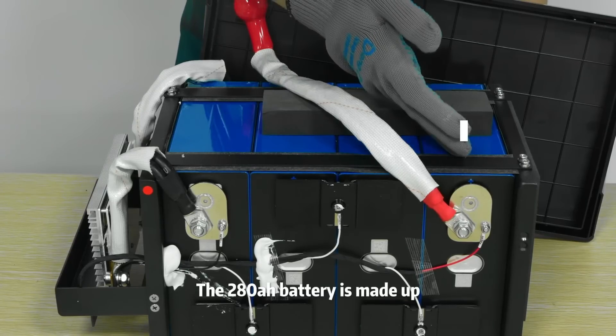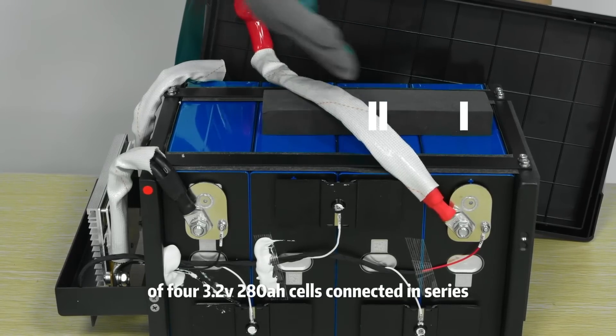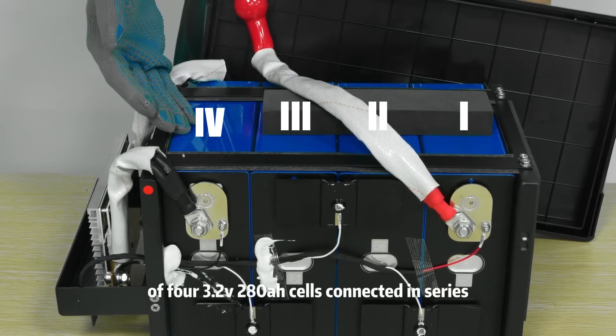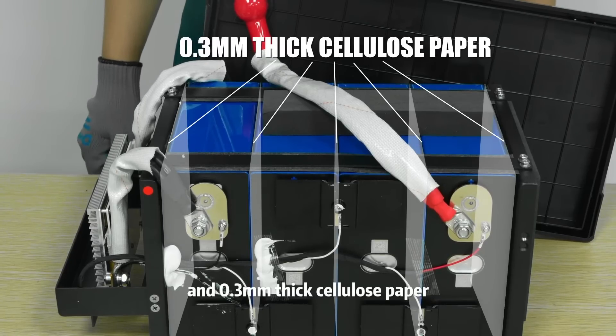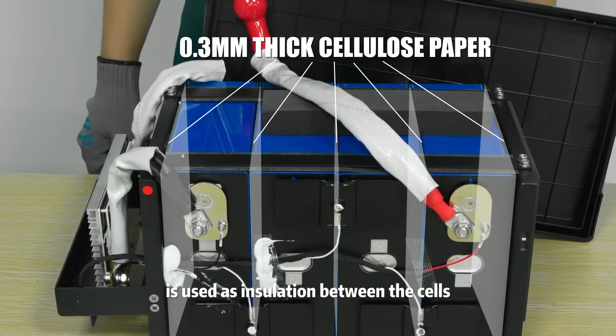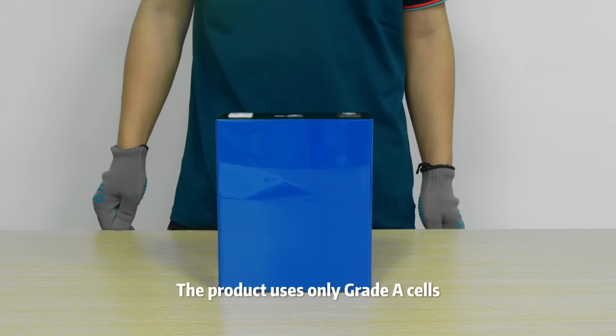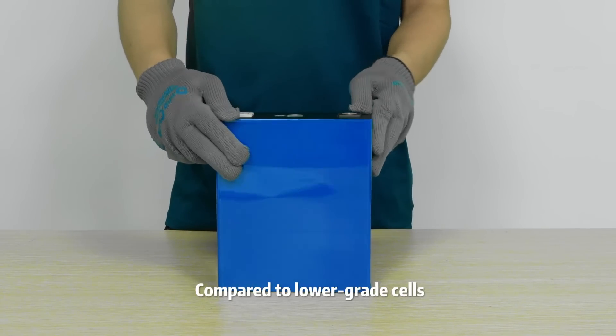The 280 Ampere-hour battery is made up of four 3.2-volt 280 Ampere-hour cells connected in series. And 0.3-millimeter thick cellulose paper is used as insulation between the cells. The product uses only Grade A cells compared to lower-grade cells.